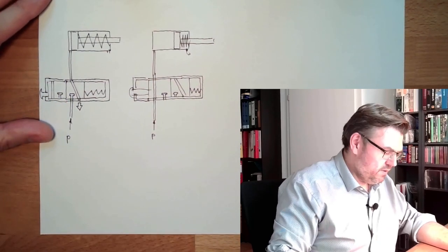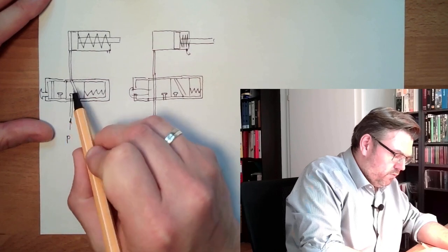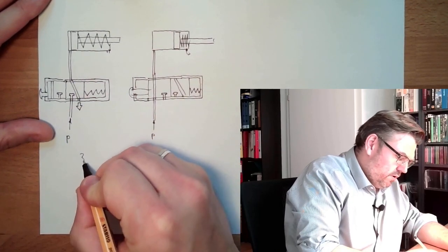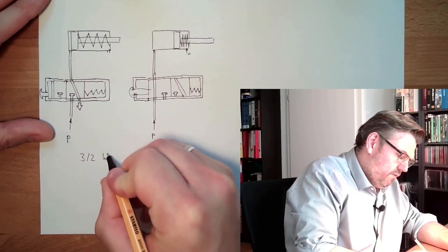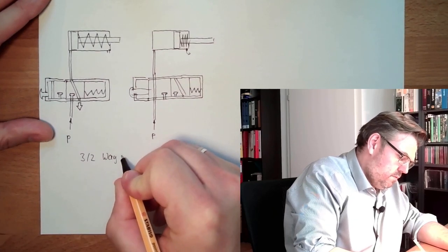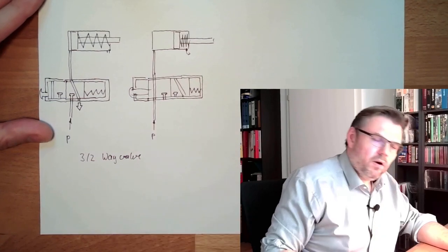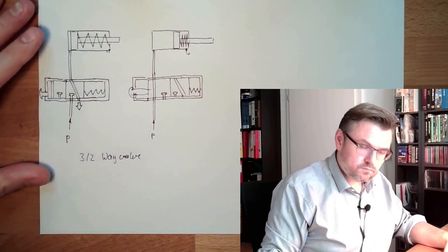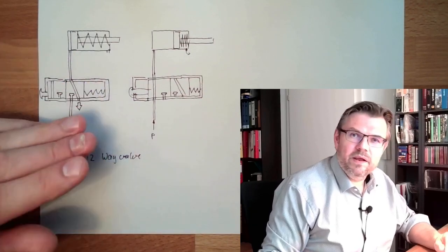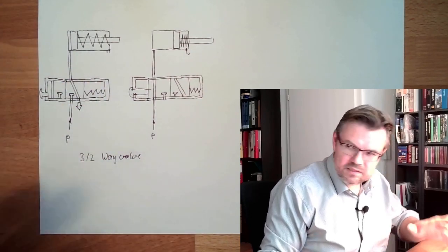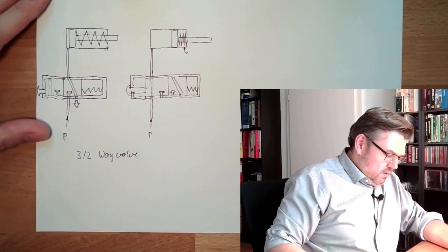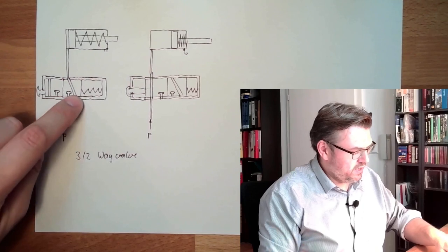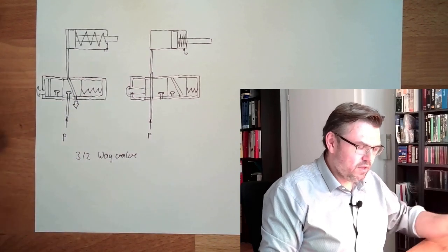And I can tell you, this control element, because it has one, two, three connections and two switching positions, it's called a 3-2 way valve. We'll talk about way valves in future, in the next video. And there I will explain a little bit more in detail what it means. So this would be a control element. There's a pressure line, there's an exhaust line, there's one working element.